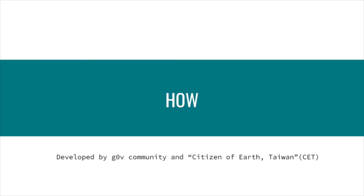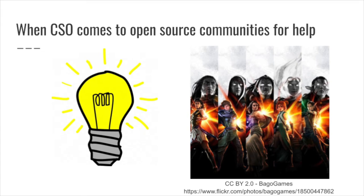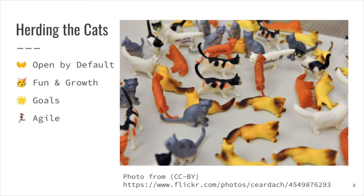When I say 'we,' it's a very loose open-source community — GovZero — and a CSO with an agenda to push, which is Citizens of Earth Taiwan. So it's actually about how to herd the cats: product management and open collaboration in civic tech projects. The story begins like this: the CSO came to the GovZero hackathon with a brilliant idea, hoping to find wizards to magically build something. However, they were a little disappointed because they actually met a cloud of cats — very good at what they do, but very independent. They only do things they're interested in, and once they lose interest, they just leave. So how do you make something deliver on time and with impact?